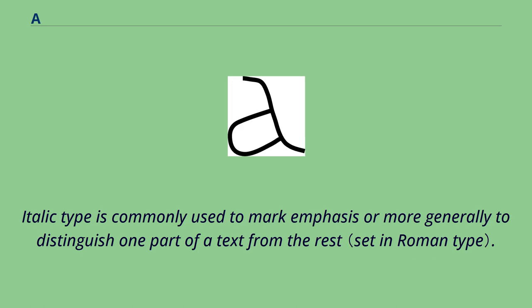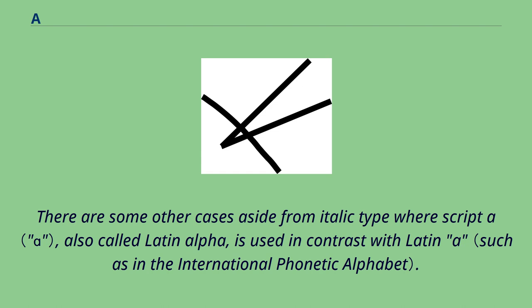Italic type is commonly used to mark emphasis or more generally to distinguish one part of a text from the rest. There are some other cases aside from italic type where script A, also called Latin alpha, is used in contrast with Latin A.